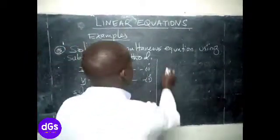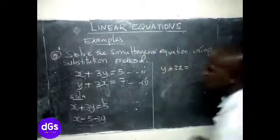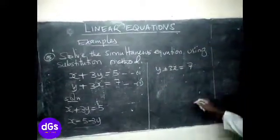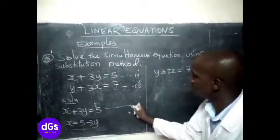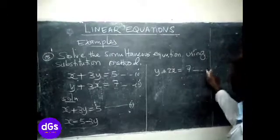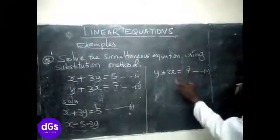So in our second equation, we have y plus 3x equals to 7. So we substitute this one, which we got from equation one. Remember, this was equation one, and this is equation two. So we are going to take this one, and we substitute it in the other equation.